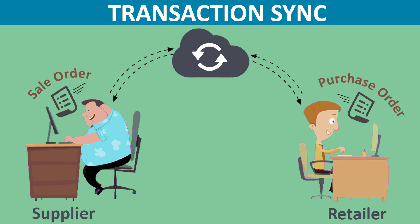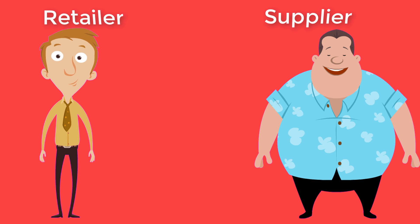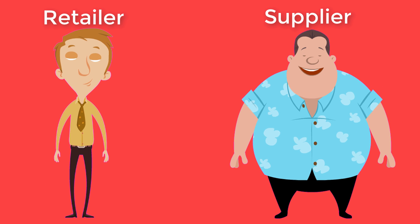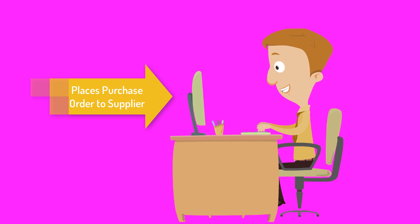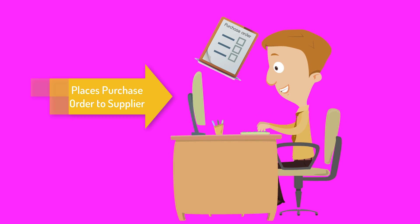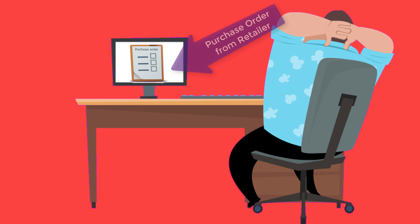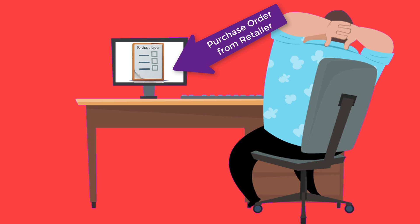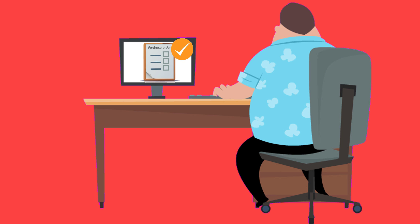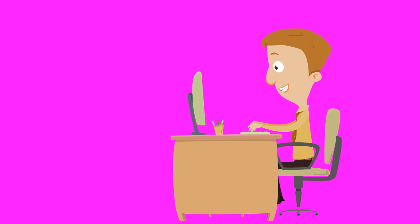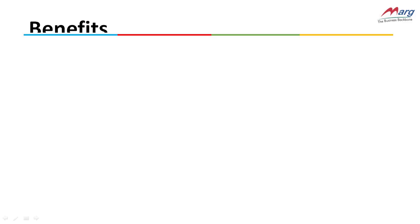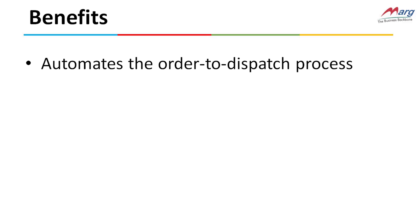Let's see how this works. Suppose both the retailer and the supplier are Mark users. The retailer places his order to the supplier through Mark Software. The supplier then receives that order in his software and generates that order's sale bill. That bill will then be sent to the retailer's software as a purchase bill. This automates the order-to-dispatch process from retailer to supplier and also saves time.